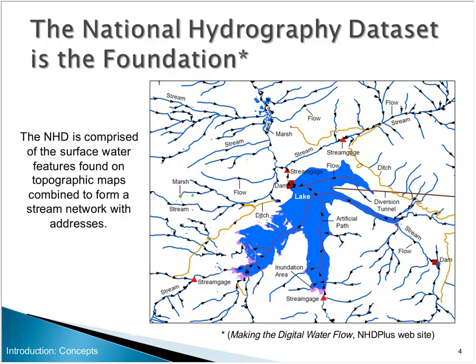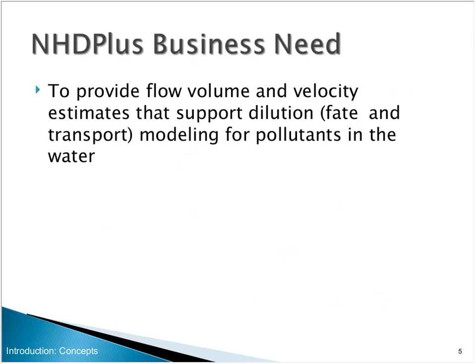EPA had been developing a less detailed version of the NHD called Reach File Version 1, and we married those concepts with the more detailed — what was the highest detailed national coverage data we had at the time — 100,000 scale. Once we finished the first NHD product in 2000, USGS and the Forest Service started working on 24,000 scale NHD, and EPA and the USGS water program started working on developing flow volume and velocity estimates for the initial NHD product to support modeling activities.